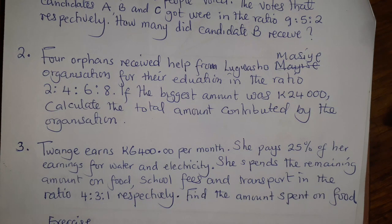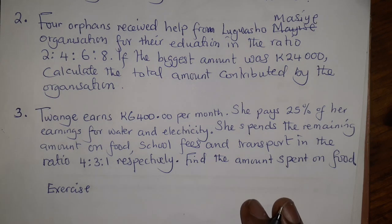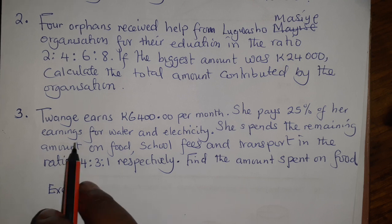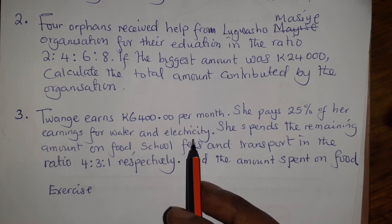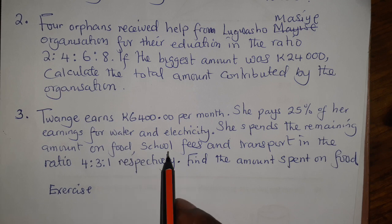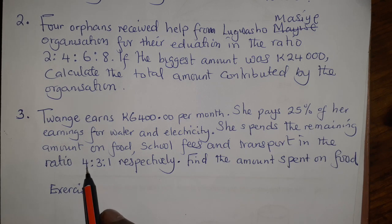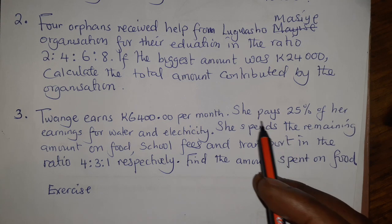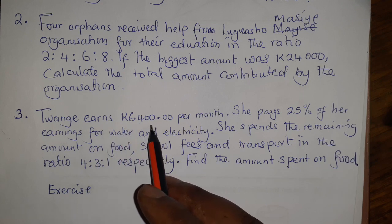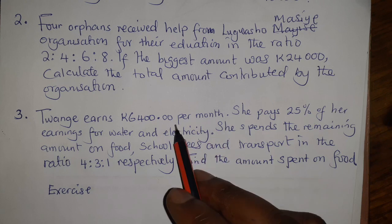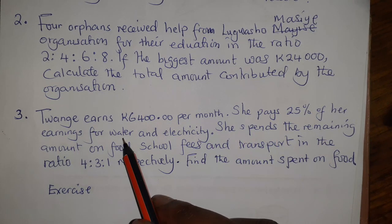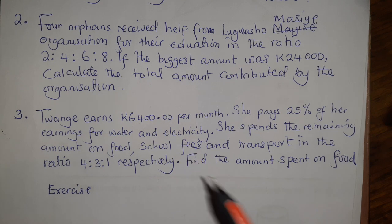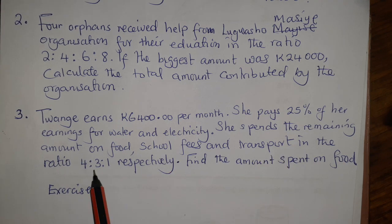Let's look at the last example. Tuange earns 6,400 kwacha per month. She pays 25% of her earnings for water and electricity. She spends the remaining amount on food, school fees, and transport in the ratio 4 to 3 to 1 respectively. Find the amount spent on food. The 25% goes to water bills and electricity, and the remaining amount is spent on food, school fees, and transport in this ratio.